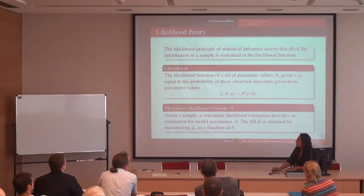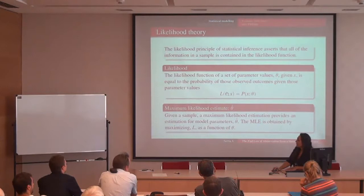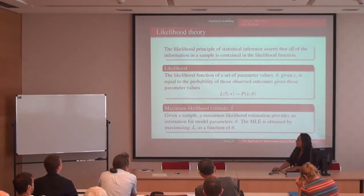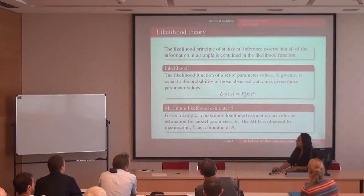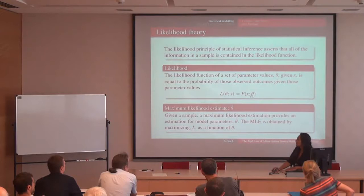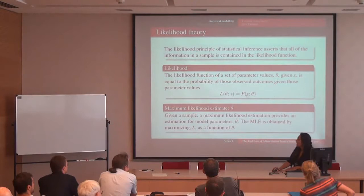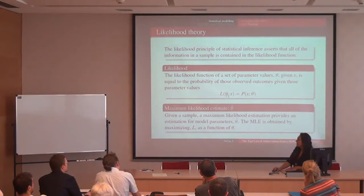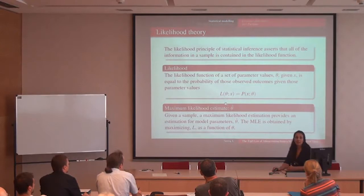Likelihood theory: when you have a model given by some probability distribution with some parameters, you try to get a way to describe — when you know the data — who the parameters are. This equals an approximation of the probability of the data given the parameters; it's a change in the conditional distribution. In this approach, which is our main approach in statistical modeling, when you have data and a model, you need to find the parameter that maximizes the likelihood.